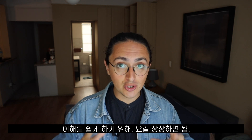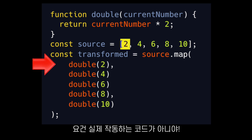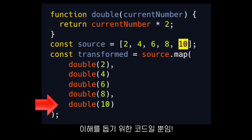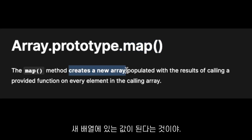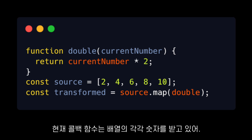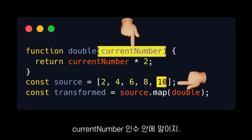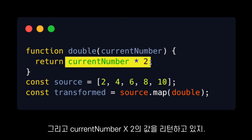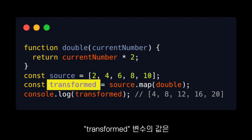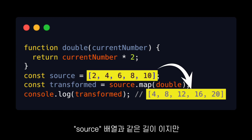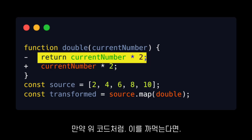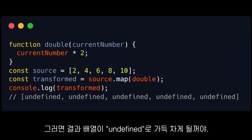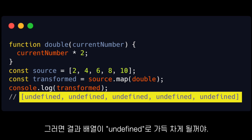So to make it easier to understand, you can imagine that something like this is happening behind the scenes. Remember, this is not real code — it's just an example to make it easier to understand what's going on. The rule for that map is that the value returned by the callback function will be the value that will be in our new array. Our callback function is receiving each of the numbers in the source array inside the current number argument and returning that current number times two. That means the transformed constant will be an array with the same length as the source array, but with the numbers doubled. It's very important to remember that the callback function has to return something. If you forget to return, then the result will be an array of the same length as the source array, but full of undefined.